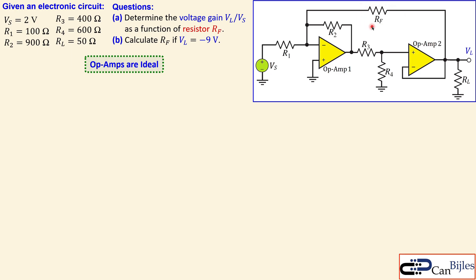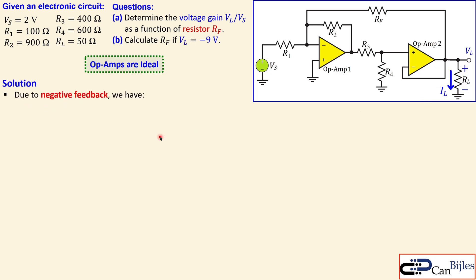We also have a feedback resistor Rf which is not given — we need to determine that. The questions are: determine the voltage gain Vl/Vs, which is the load voltage divided by the source voltage, as a function of Rf. We also need to calculate Rf if the load voltage is minus 9 volts when Vs equals 2 volts. We consider everything ideal, so the op-amps are ideal. Vl is at this node with respect to ground, so current flows from top to bottom.